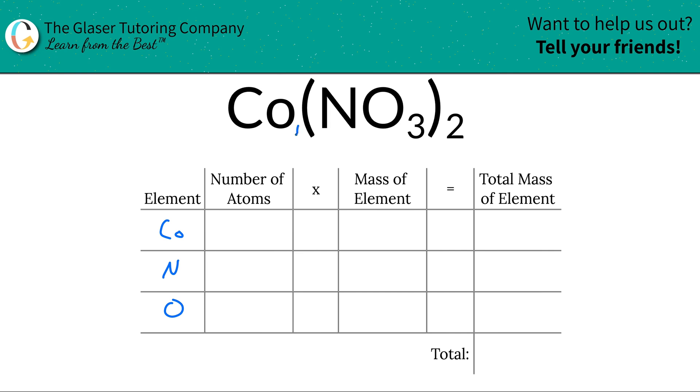So at the bottom of cobalt, there is a 1 there. It's not a zero, it's a 1. So we have one cobalt. At the bottom of nitrogen here, we also have a 1, but nitrogen is tied up in the nitrate anion, the nitrate polyatomic anion, and you have two of them. So if in each nitrate there's one nitrogen, but you have two nitrates, you'll have two nitrogens in total.